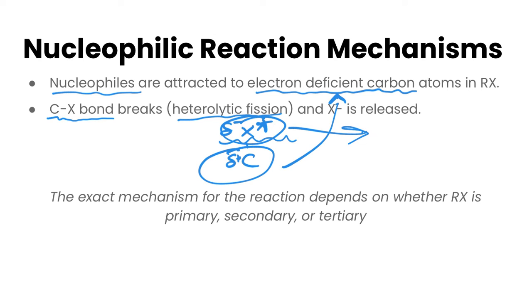So like I said, the exact mechanism is going to depend on the type of halogen alkane we have, and it's really dependent on whether it's primary, secondary, or tertiary.